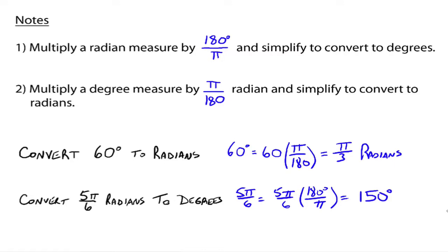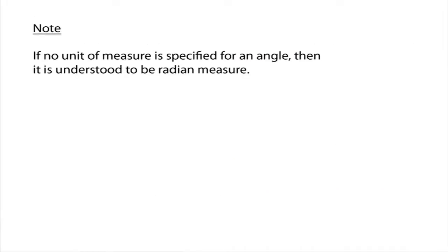Make sure we understand how to convert between degrees and radians. And because radians are unitless in measurement, we need to make note of the following. If no unit of measure is specified for an angle, then it is understood to be in radian measure. So for example, if you put down the number 45, that's understood to be 45 radians, not 45 degrees. If we want degrees, we have to put that symbol up there, the little degree symbol, that's 45 degrees.